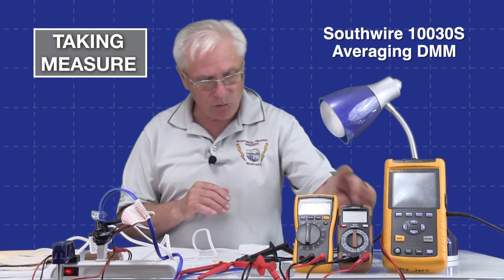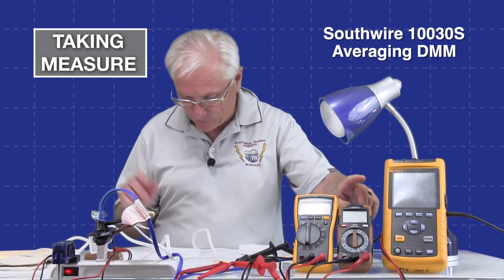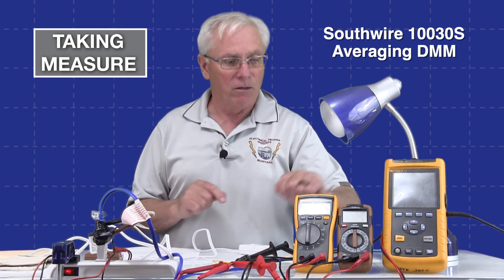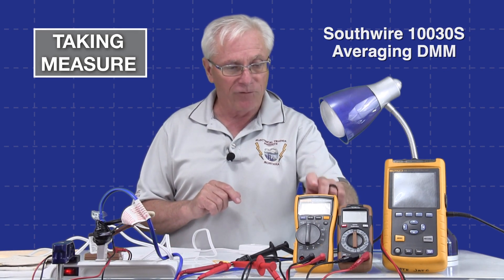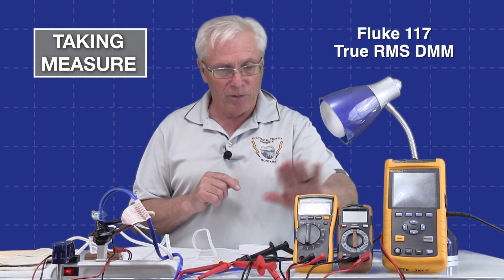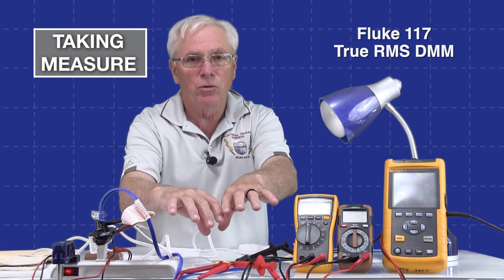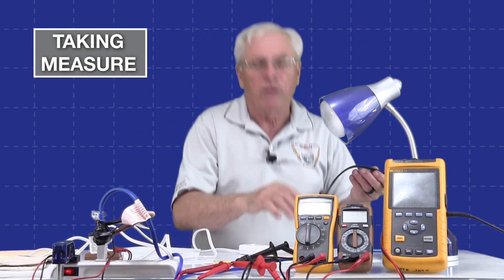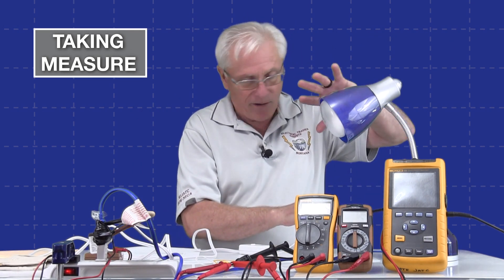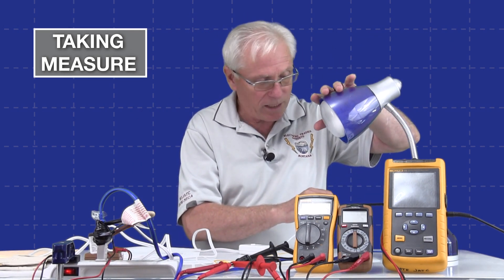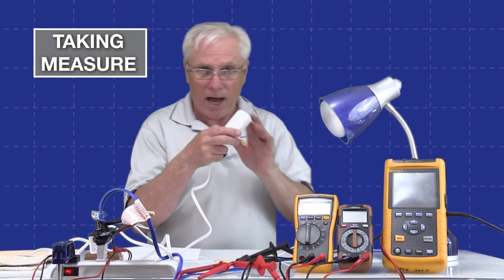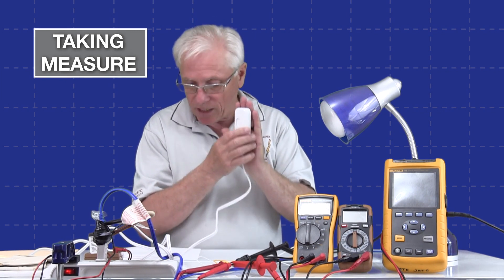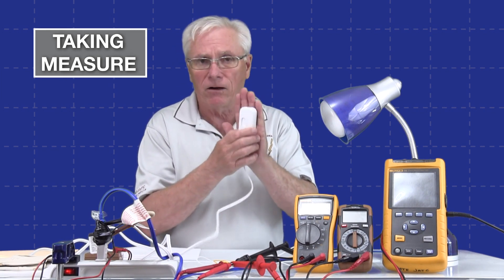The next thing we have is a Southwire digital multimeter—a 10030S meter—and then a Fluke 117. We'll be using all of those, and I have them hooked into the circuit right here. They come back to a receptacle on this lamp, and it has an incandescent bulb in this lamp. It's all powered through a dimmer, and we're going to see what happens when we use the dimmer.